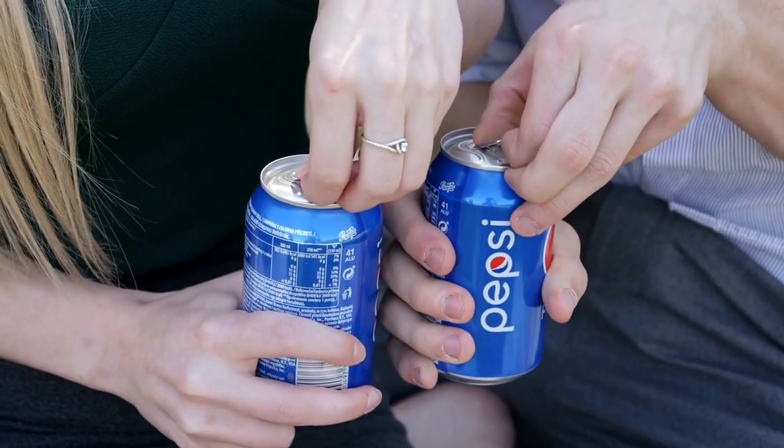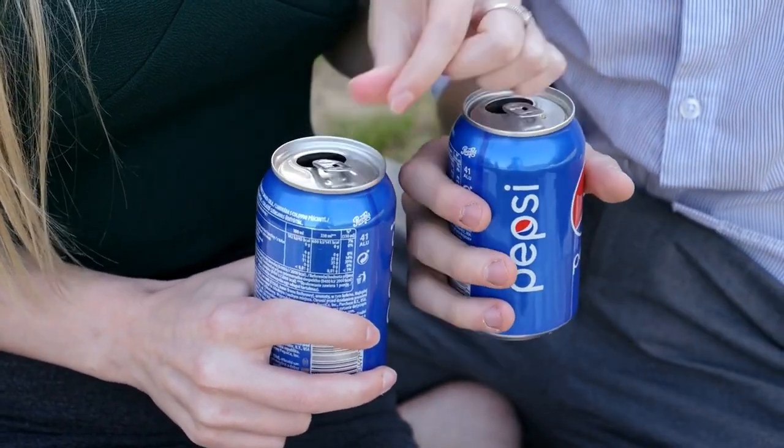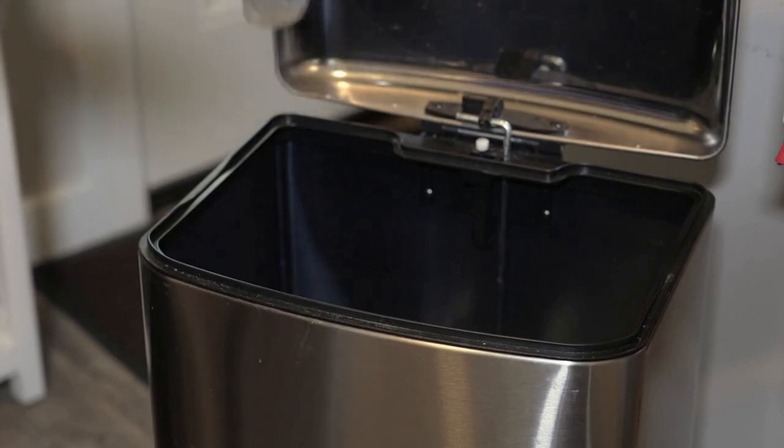To open a soda can, there are several different mechanisms. The most common is the pull tab, which was introduced in the 1960s. After the soda can has been consumed, it can be recycled.